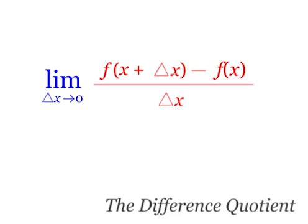It can't be zero, because then I would have zero in the denominator of the fraction. That's why I have to use a limit. And I say, get that delta x as small as possible.